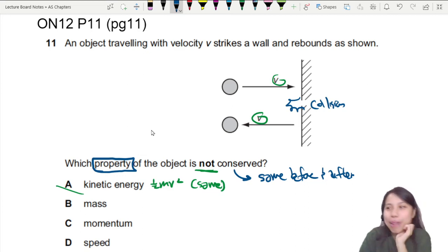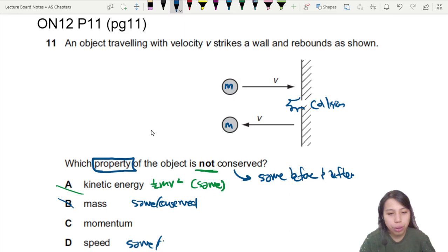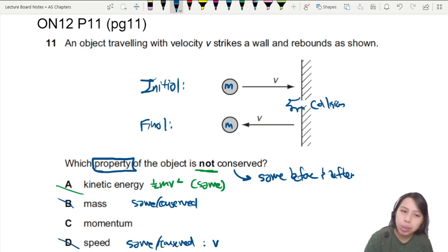Let's look at mass. Did the mass of the ball change? Here is mass, here is mass. Did the ball break in half, explode, become dust? Nope. So mass is the same or the mass is conserved. Momentum and speed, the last two choices. Which one is conserved? I would say that speed is conserved. Same, conserved, because it is v. At first initial it is v. After collision final it is still v. So speed is conserved. That means momentum is the answer. But why is momentum not conserved?